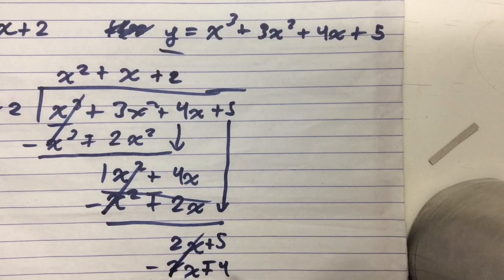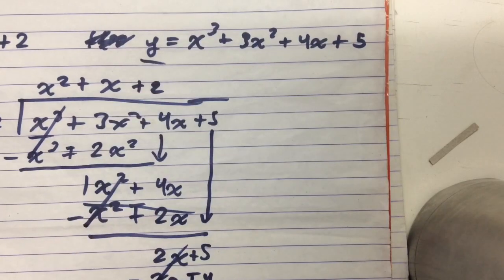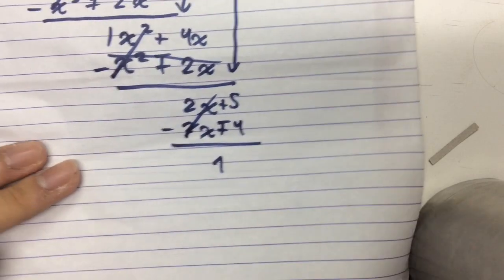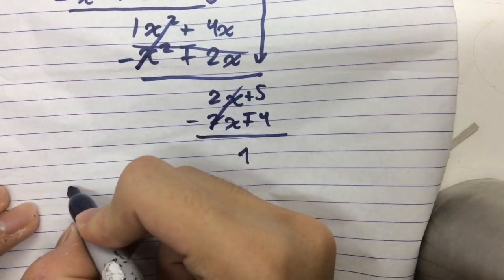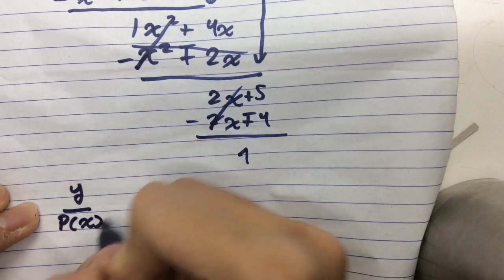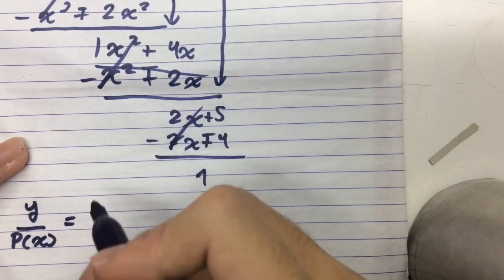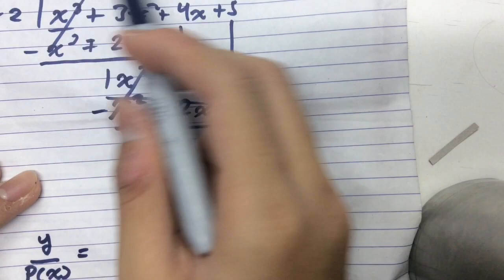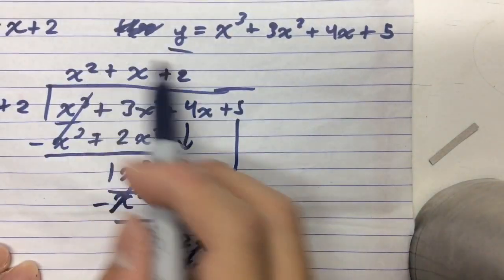Because we flip the signs. And 5 minus 4 is 1. And how do we write the final answer for this type of polynomial? So basically, our final answer, y over p(x) would be equal to this quotient: x squared plus x plus 2.